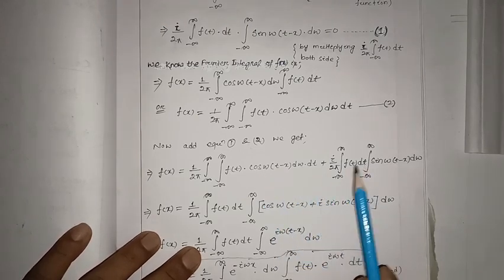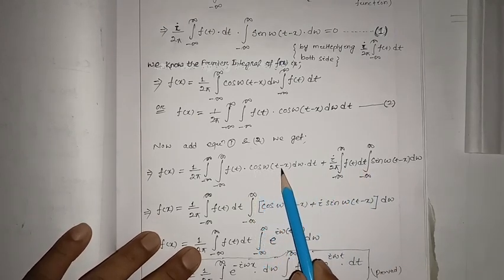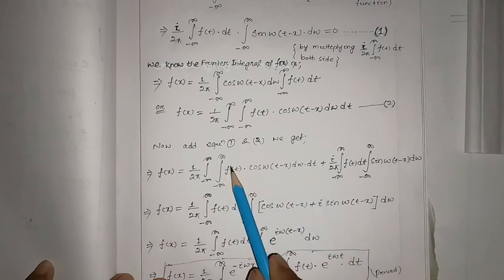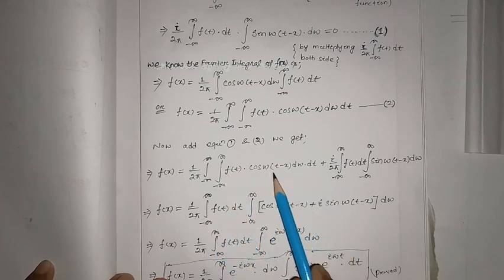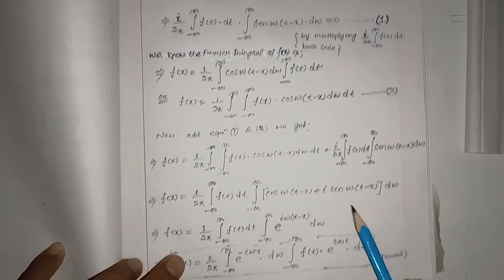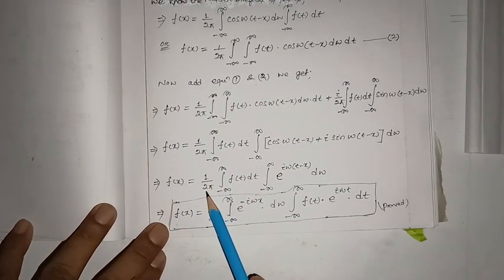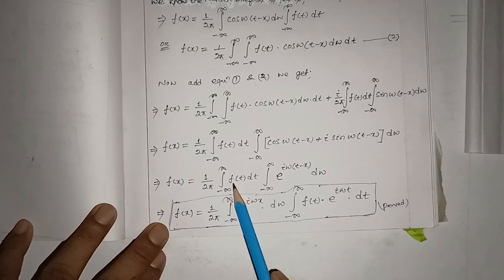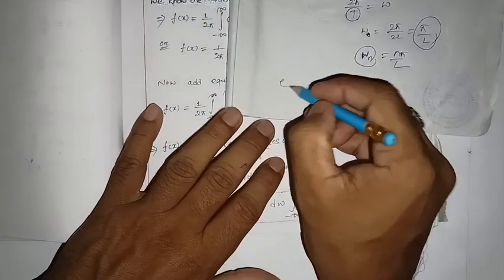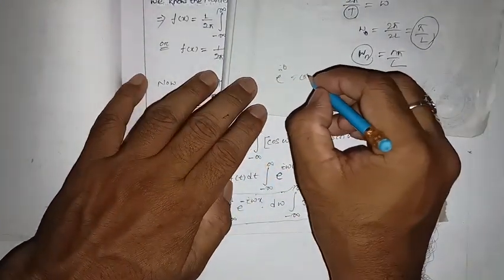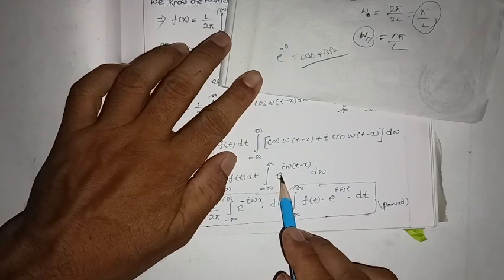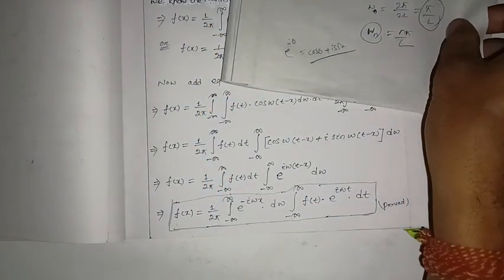Taking f(t) dt common, we find the inner integral contains cos(ωt - x) plus i·sin(ωt - x) dω. By Euler's formula, e to the power i·θ = cos(θ) + i·sin(θ), so cos(ωt - x) + i·sin(ωt - x) equals e to the power i(ωt - x). Therefore f(x) = one by two pi, integral of f(t) dt times e to the power i(ωt - x) dω.